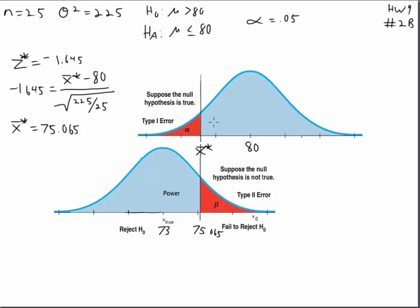So what that means is that if we get a number bigger than 75.065, like 76, we will fail to reject. Now this is a false null hypothesis, so if we get a number like 76, we're going to have Type II error because we failed to reject this false null hypothesis.